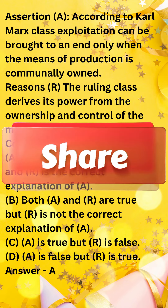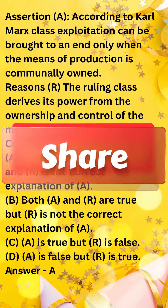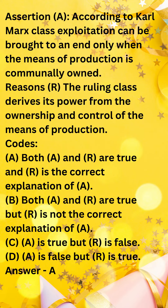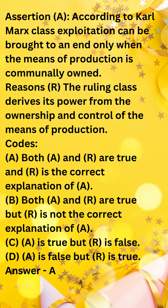Codes: A — Both A and R are true and R is the correct explanation of A. B — Both A and R are true but R is not the correct explanation of A. C — A is true but R is false. D — A is false but R is true.